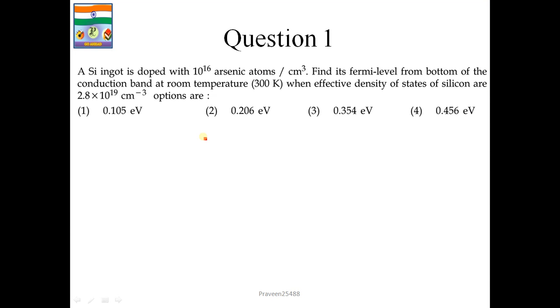Question number 1: A silicon ingot is doped with 10 to the power 16 arsenic atoms per centimeter cube. Find its Fermi level from bottom of the conduction band at room temperature 300 Kelvin when effective density of states of silicon are 2.8 into 10 to the power 19 per centimeter cube. You should know the formula: EF minus EC equals KT natural log of ND upon NC. For temperature 300 Kelvin, KT is 26 millivolt. On putting these values, you can easily get the answer which comes approximately 0.206 electron volts. So correct option is 1.